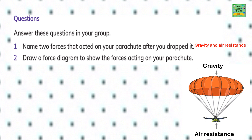Now here are a few questions that you need to answer. Name two forces that are acting on the parachute after you dropped it — they are gravity and air resistance. Draw a force diagram to show the forces acting on your parachute. Gravity moves downwards and air resistance goes upwards.